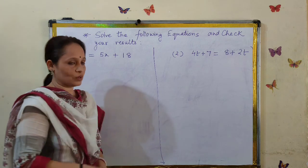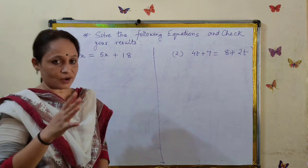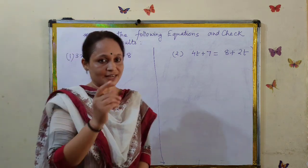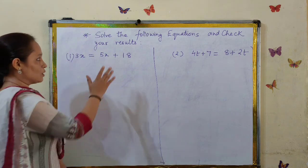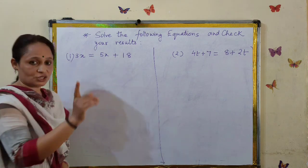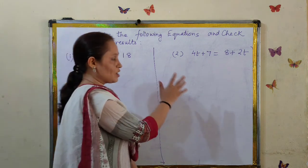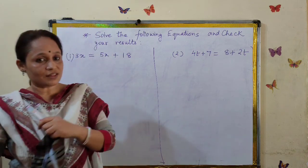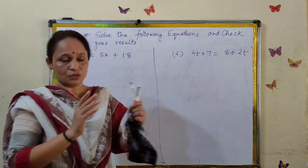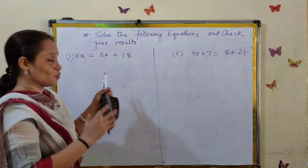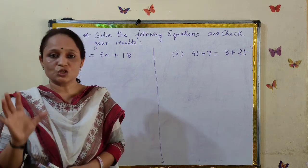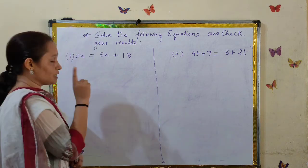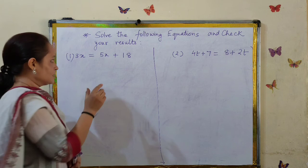We already solved equations in the last video, but that time the equation we solved had one side as a constant. But this time we are solving equations where both sides of the equal to sign are algebraic expressions in one variable, and linear as well.